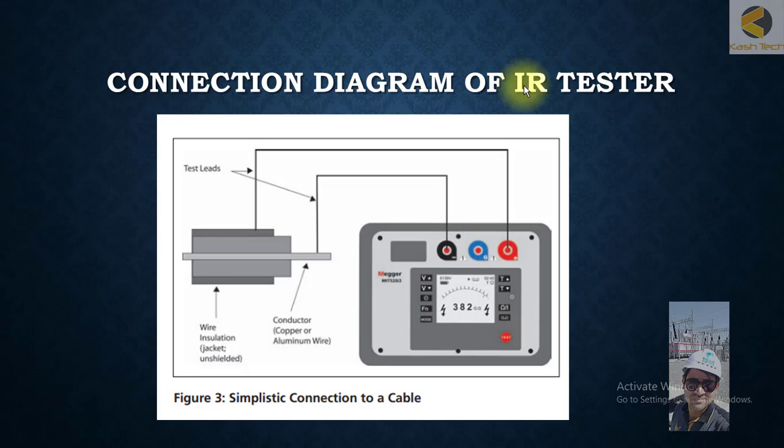Now you will see the connection diagram to test a simplified cable which doesn't have a metallic sheet. You are connecting the object under test—the cable connector—to the negative lead for the insulation testing equipment. You will connect the insulation to the red lead, so in this way you can test the insulation for the cable.